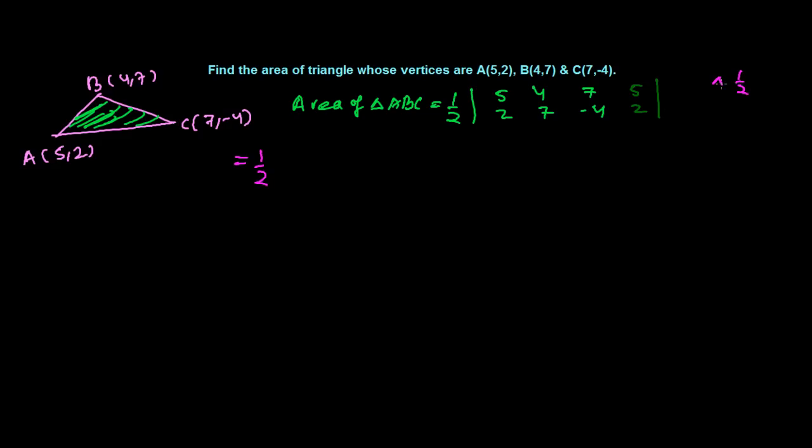Now let's find it. The triangle's formula is one by two southeast minus southwest. Keep in mind, so first we'll be adding all the southeast arrows. So our first one is 5 times 7, and then 4 times minus 4, and then 7 times 2.